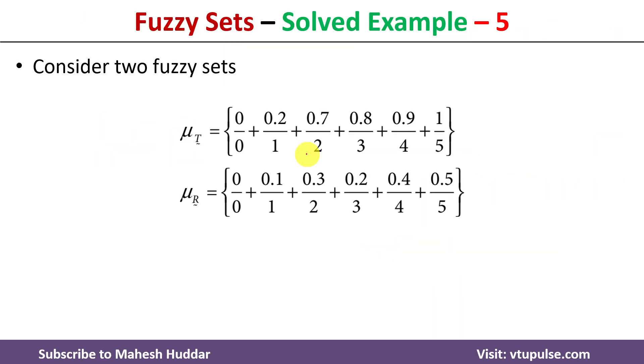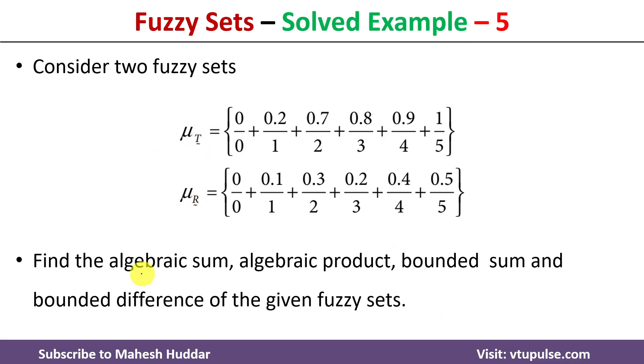In this case we have been given two fuzzy sets T and R. Between these two we need to calculate the algebraic sum, algebraic product, bounded sum and bounded difference.